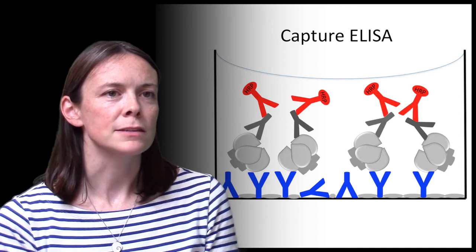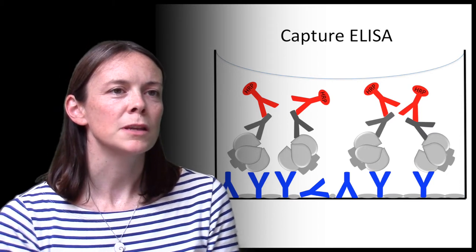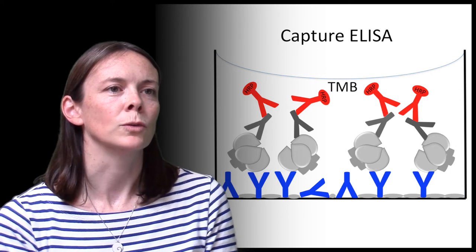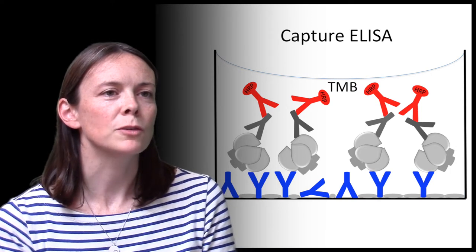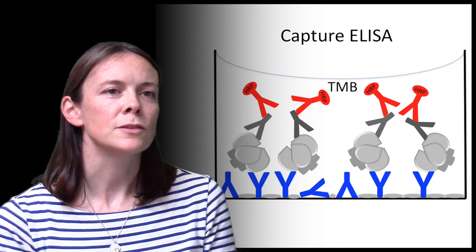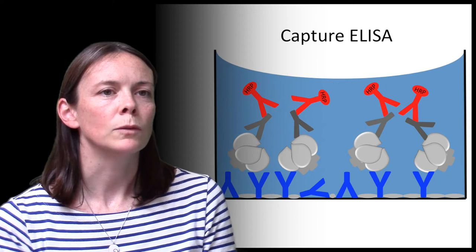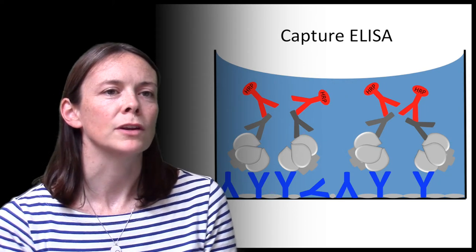Finally, the presence of the enzyme is detected by adding the enzyme substrate, a chemical called tetramethylbenzadine or TMB for short. Upon exposure to HRP, the TMB turns from a clear liquid to a blue liquid and the intensity of the blue signal will correlate to the amount of HRP and hence your protein of interest.